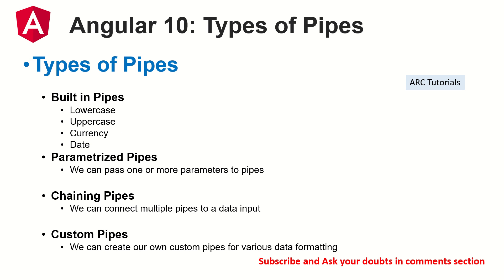We can also chain pipes. Chaining means you can connect multiple pipes to a single data input. For example, you can first apply uppercase, then apply currency or date — you can connect multiple pipes together to get a desired output. It's like a mix and match, applying more than one pipe to get the desired output.